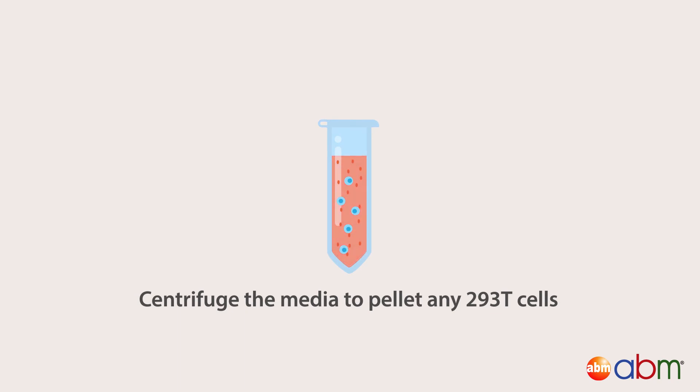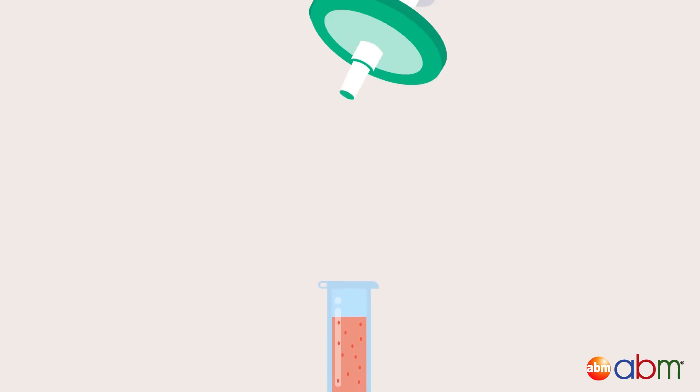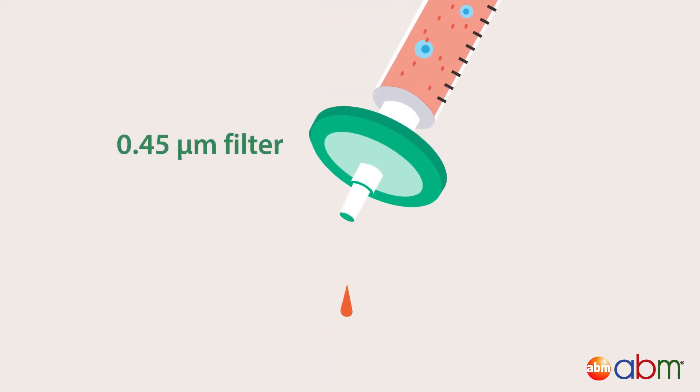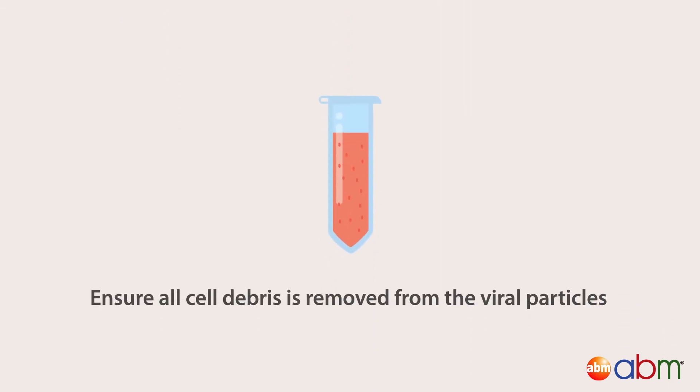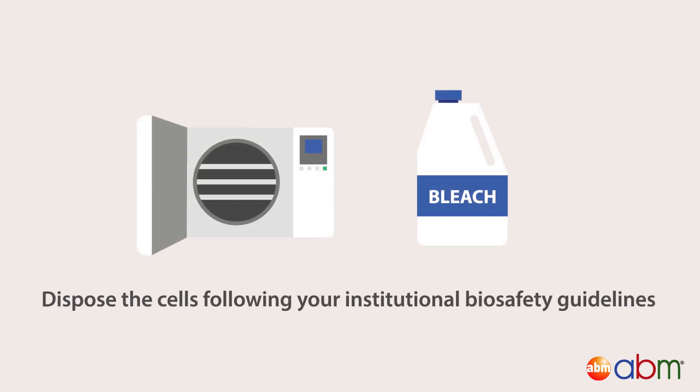Centrifuge the media to pellet any 293T cells inadvertently collected during harvesting. Filtering is recommended using a 0.45 micromolar filter to ensure all cell debris is removed from the viral particles. Dispose the cells following your institutional biosafety guidelines.